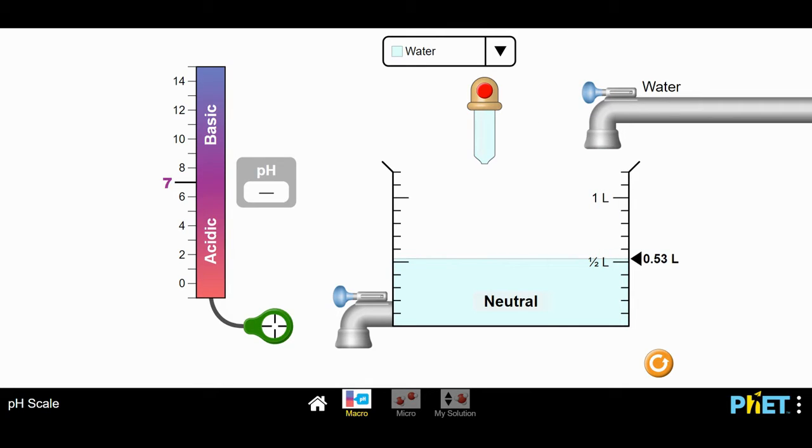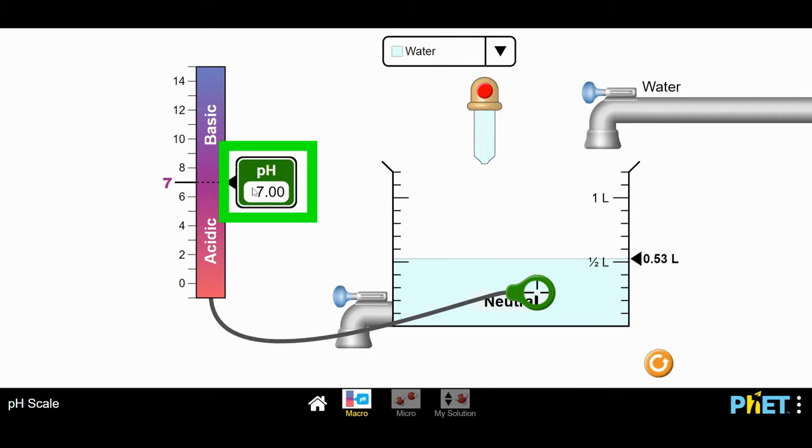The goal of this simulation is to measure the pH level of a number of different solutions. So I have a pH meter attached right here, and I'm going to move that into the liquid. All right, there we go. So we can see that right now the water is measuring at a pH of 7.